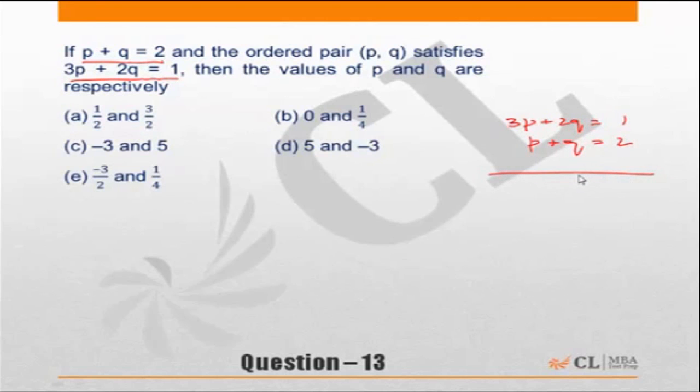Solve these two equations to get the values of p and q. But you will be happier, or it will be faster, just substituting the choices. First of all, I know that p and q should add up to 2. Let's look at the choices.